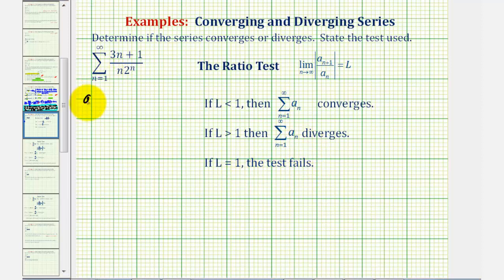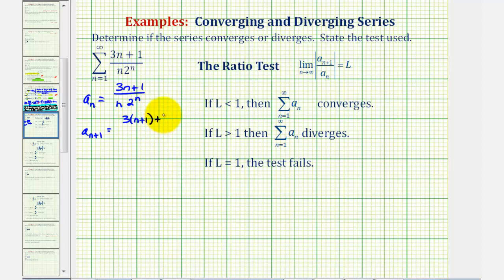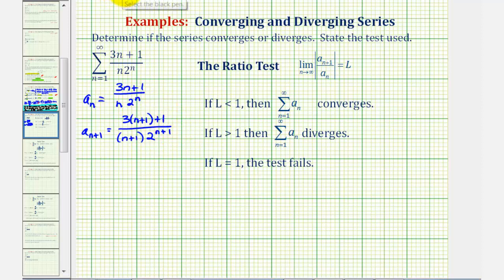So a sub n from the given series would be three n plus one divided by n times two to the power of n. Therefore, a sub n+1 — substituting n+1 for n — would be three times (n+1) plus one divided by (n+1) times two to the power of n+1. The reason the ratio test is a good choice is because this quotient simplifies nicely, since we have two to the n and two to the n+1.